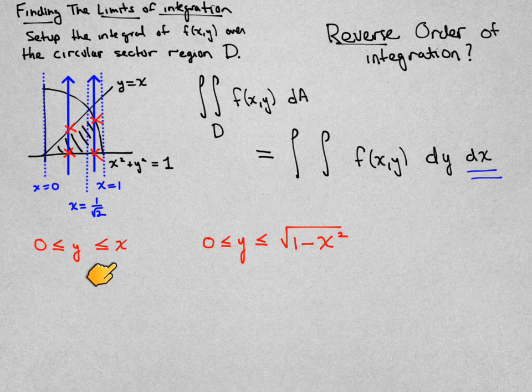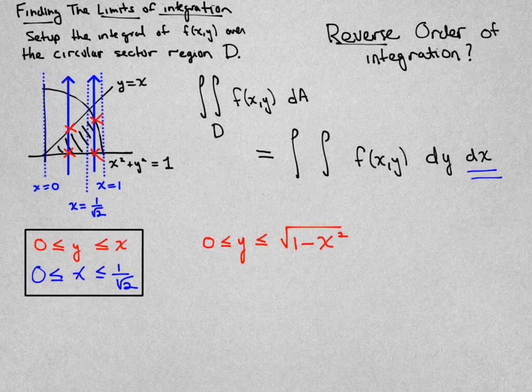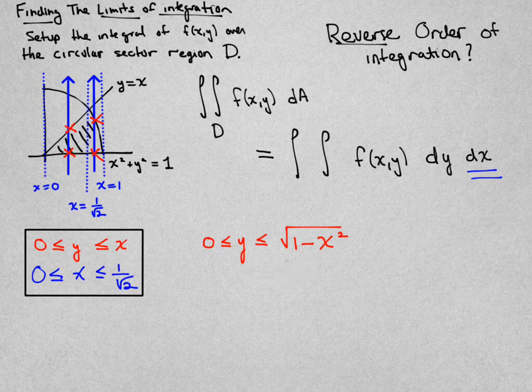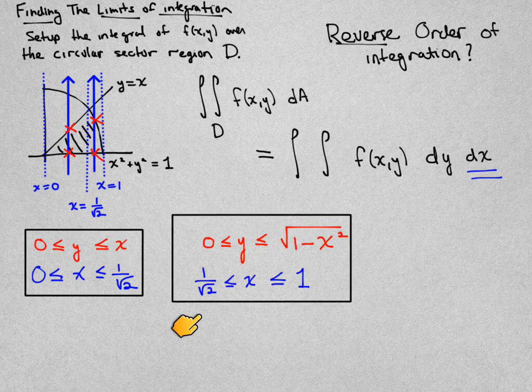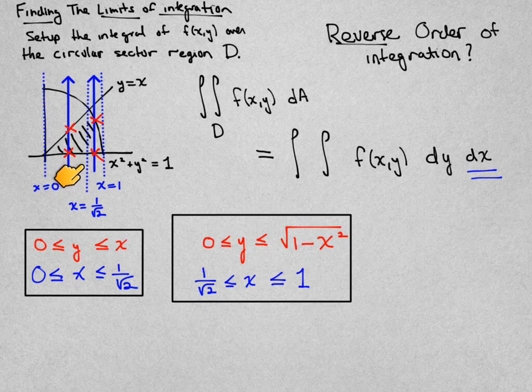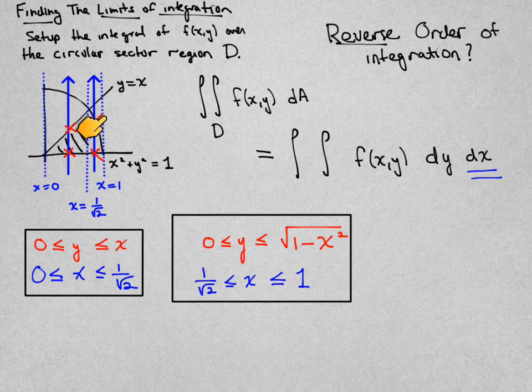And so this formula over here is valid when x is between 0 and 1 over root 2. And then this formula over here is valid when x is to the right of that, when it's between 1 over root 2 and right there when x is equal to 1.